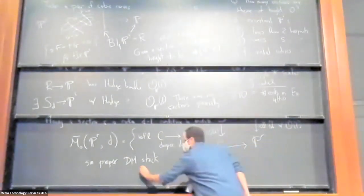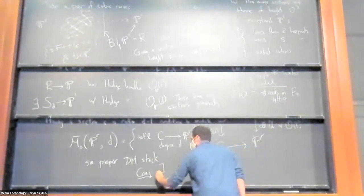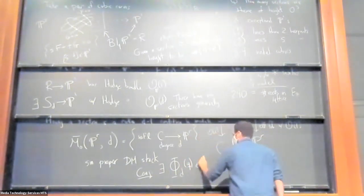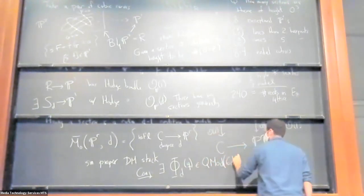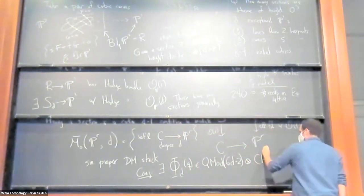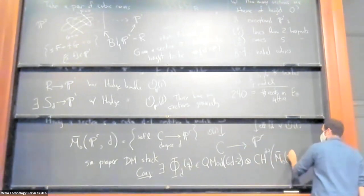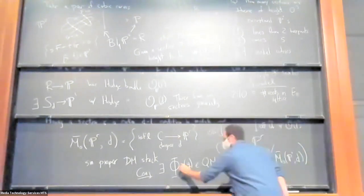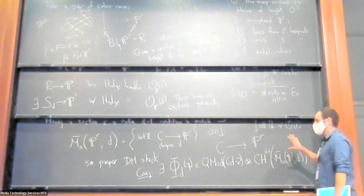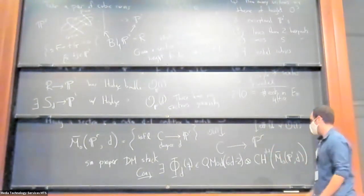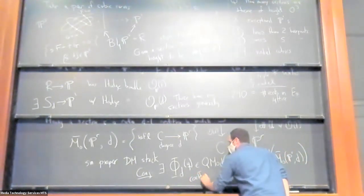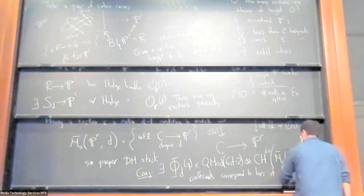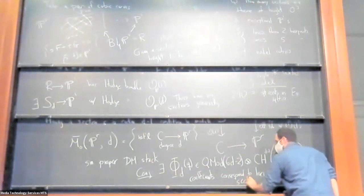Now I can state the conjecture. The conjecture is that for each d, there exists a cycle valued modular form. It's actually a quasi-modular form, phi_B of q. The quasi-modular form has weight 6d minus 2. That's going to be the cohomology of this in complex codimension d minus 1. So what is this? It's just a power series in q, where the coefficients, instead of being numbers, are Chow classes or cohomology classes. And so the coefficients correspond to the locus of surfaces with a section of height n minus d.